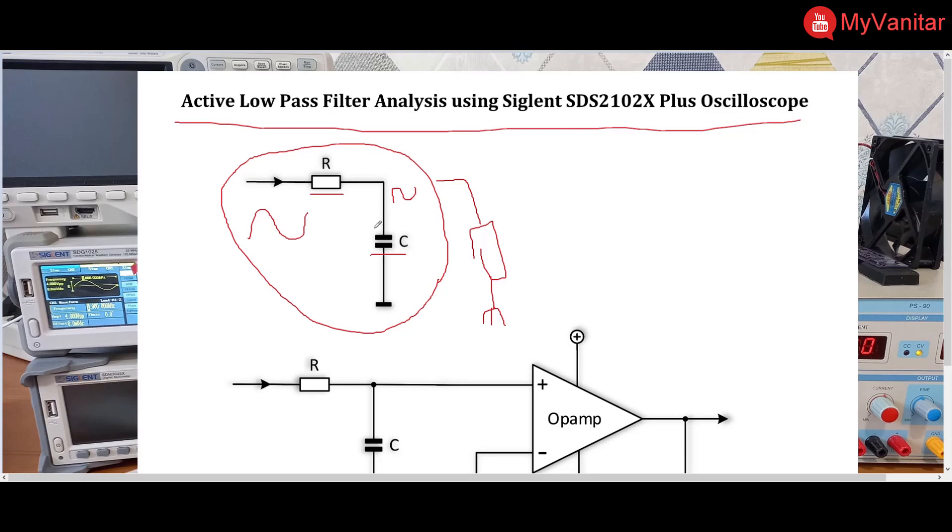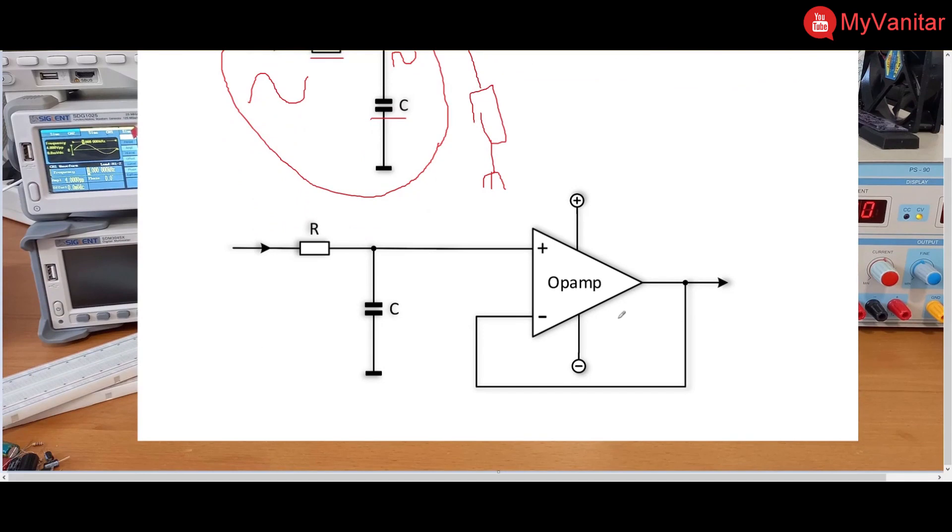To solve this problem, we can use an active filter, and it is called active because of using an op-amp. So the only thing we need to do is to connect the output of this RC filter to the positive input of the op-amp.